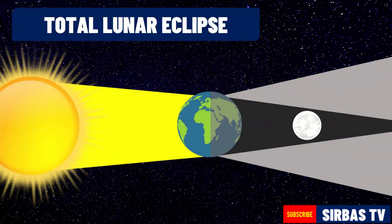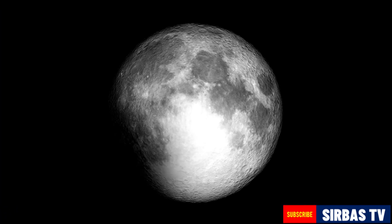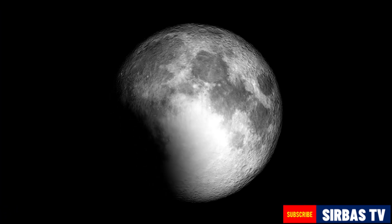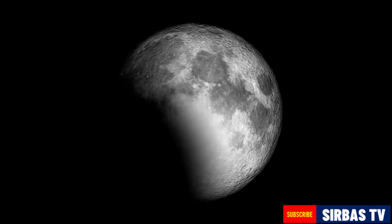When the moon is located within the umbra of the earth's shadow, a total lunar eclipse occurs. It happens when the moon and the sun are on exact opposite sides of the earth. In this case, the moon will look totally dark.